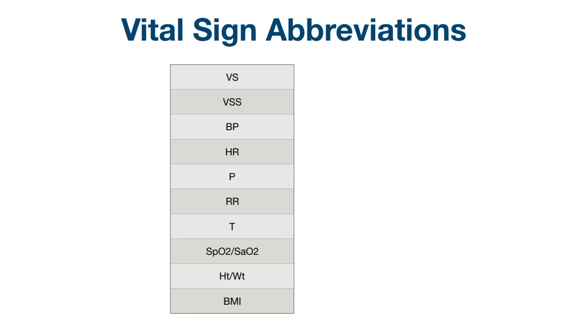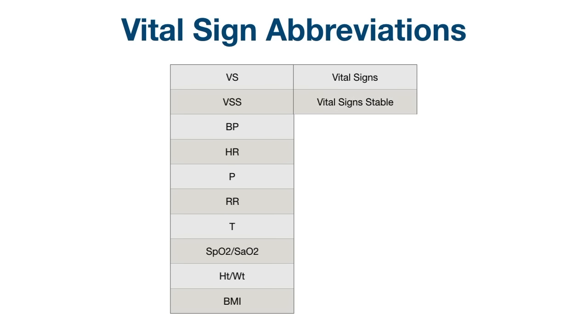Moving on to vital signs — you might see these in charts as well. Hit pause and try to name them and then see if you're right. VS stands for vital signs. VSS stands for vital signs, stable.